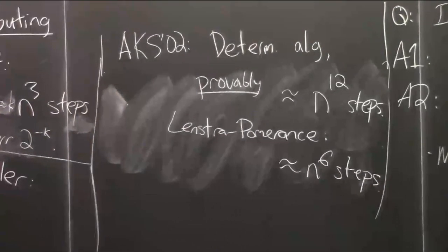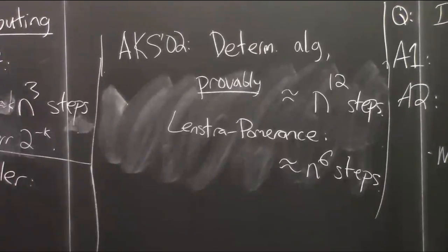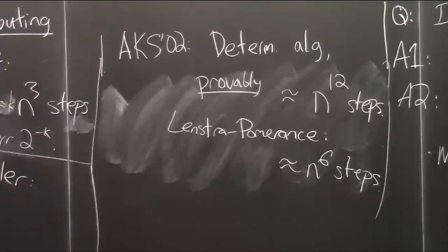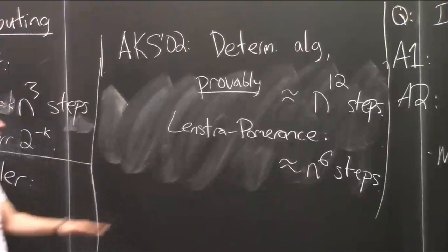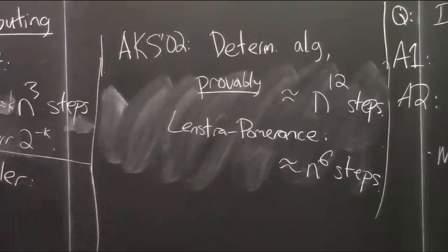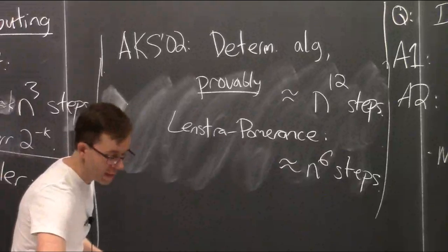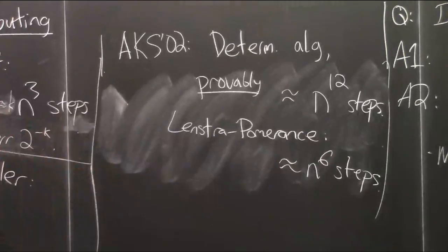Theoretical computer scientists were super excited because it officially meant the problem was in P — a polynomial time algorithm, deterministic, with no assumptions. Later, Lenstra and Pomerantz improved this to about n to the 6 steps. That's good, but n to the 6 for 1,000-bit numbers might take a computer a week to test if a number is prime. That's not awesome, but it's still a physical amount of time — still a P algorithm.